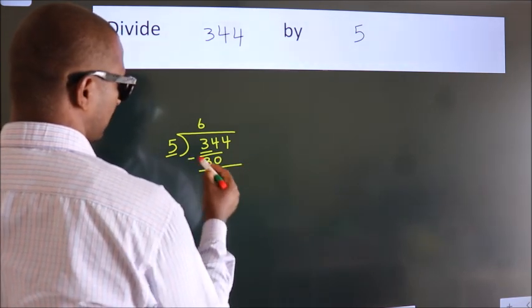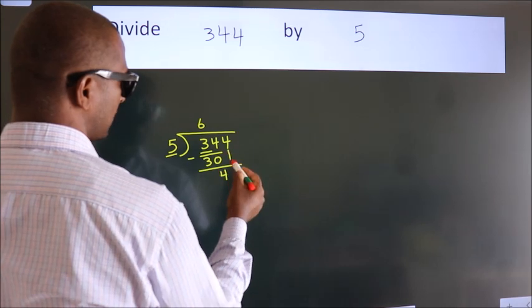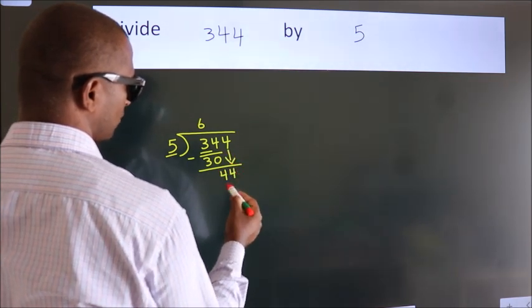Now we should subtract. We get 4. After this, bring down the beside number. So 4 down. So 44.